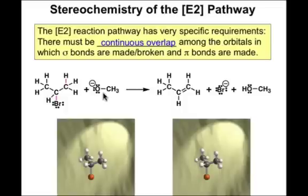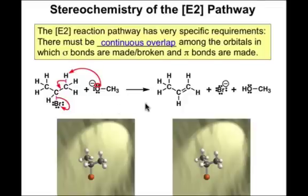Methoxide is the strong base that promotes the elimination of HBr by the E2 pathway in isopropyl bromide. The curved arrows show the key orbital overlap that must be met in order to bring about the formation of this carbon-carbon pi bond. It's a pi-type overlap between the sigma bond of this carbon-hydrogen and the sigma star that's positioned behind this carbon-bromine bond.